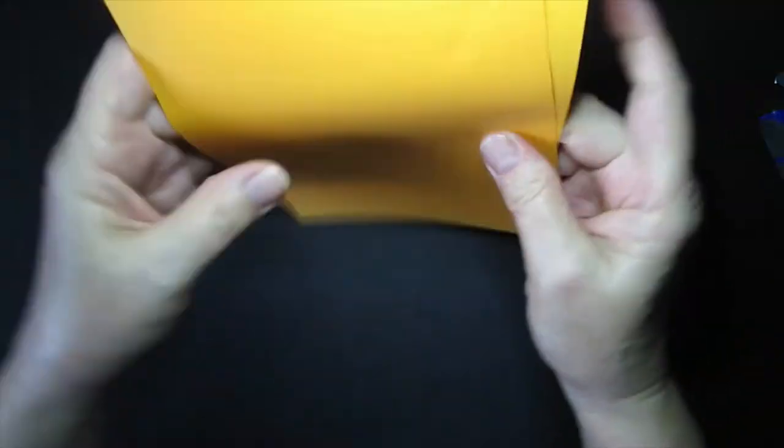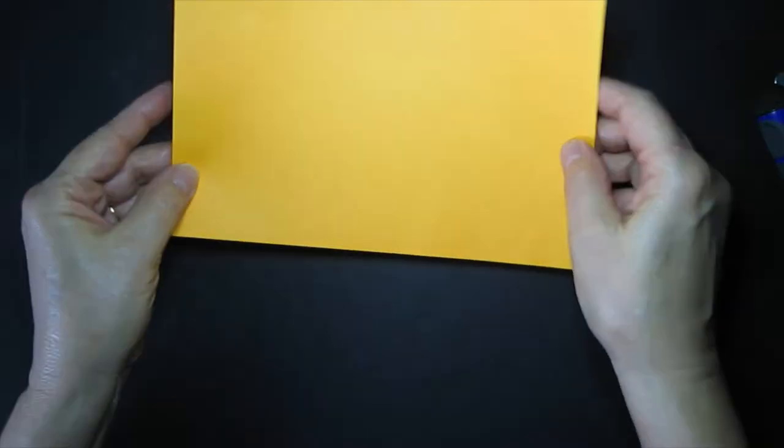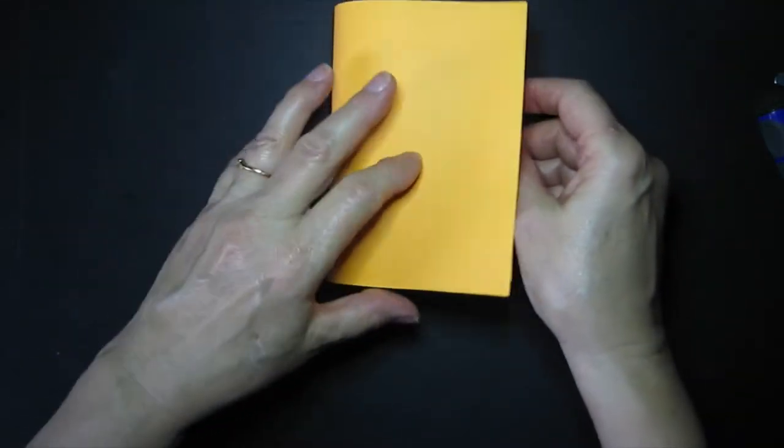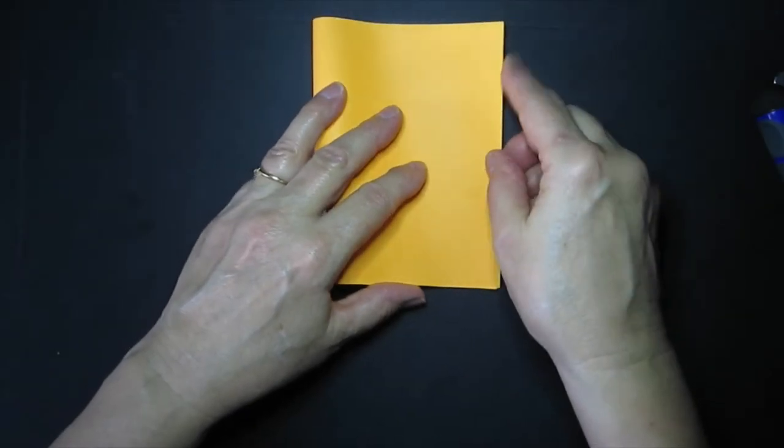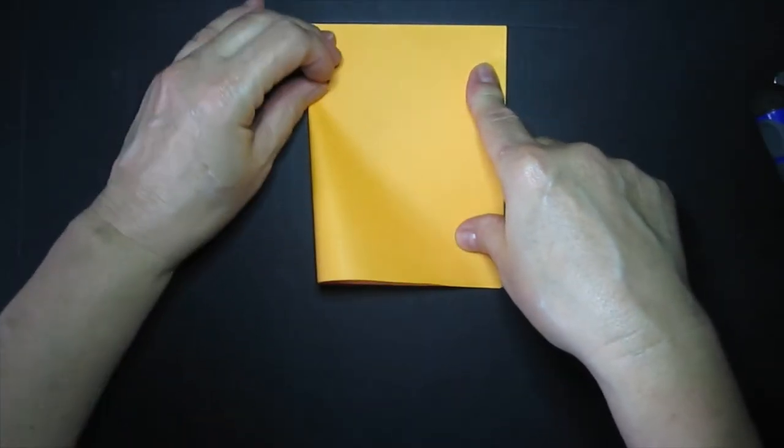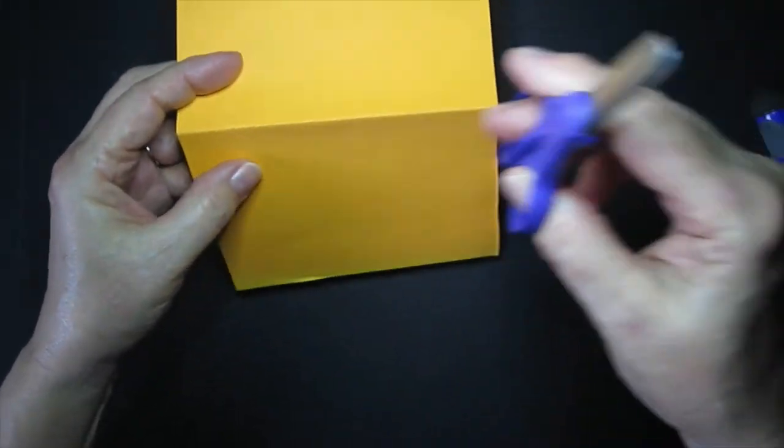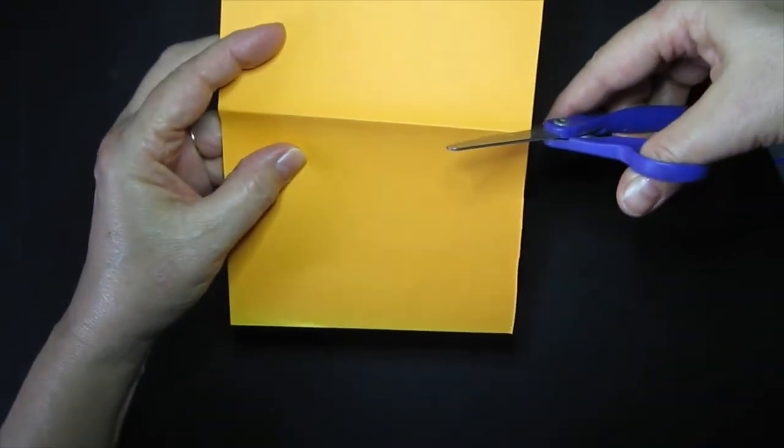Okay, now you put those two together and repeat the same thing. Short edge to short edge, fold, crease, pick up, look at the line, use your scissors to cut on that fold line.